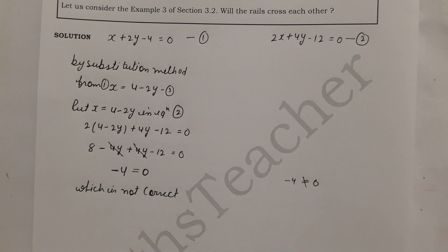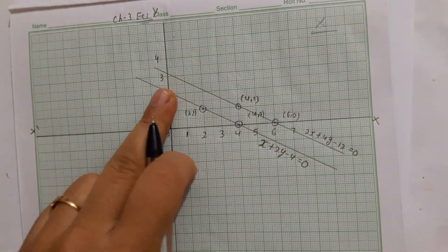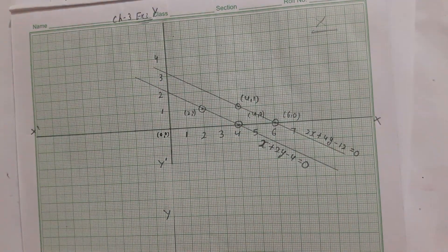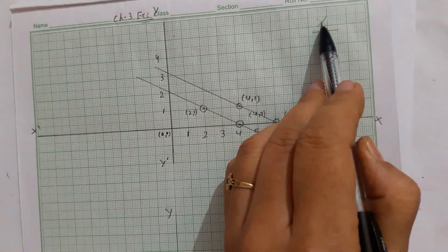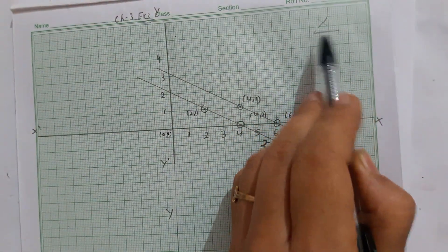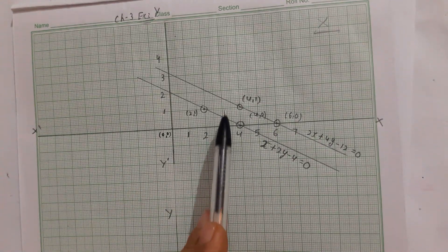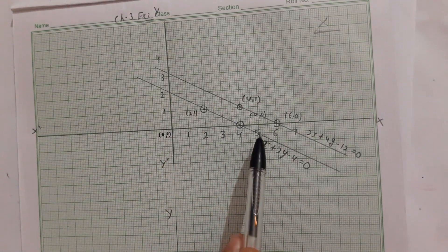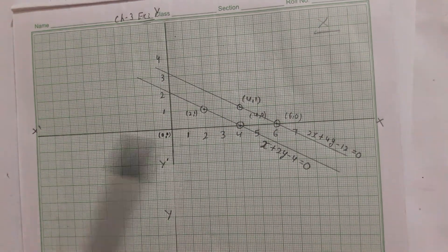Looking at the graph, we can see that these two lines are parallel. Parallel lines do not intersect anywhere. For a solution, we need either the lines to intersect or to coincide (overlap). When the lines are parallel, they neither intersect nor overlap, so we get no solution.